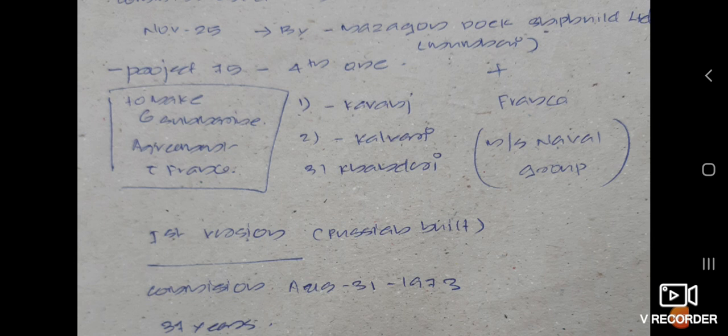The first version of INS Vela was commissioned on August 31, 1973. But that was a Russian-made submarine. The new version of INS Vela is built in partnership with France, but the older one was made in Russia.